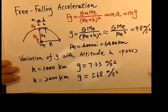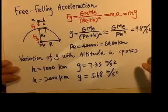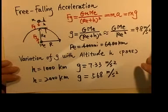We probably will have a g of 9.73 meters per second squared. That is the variation due to the latitude.